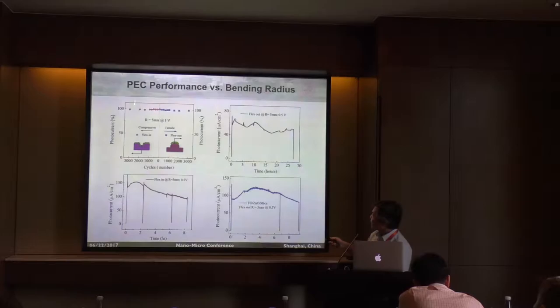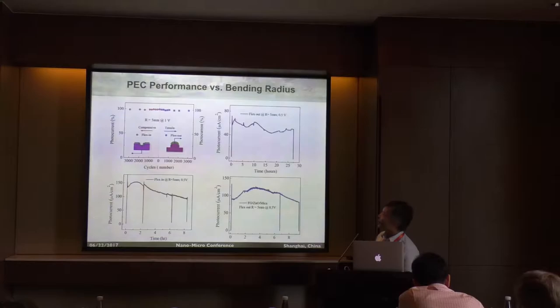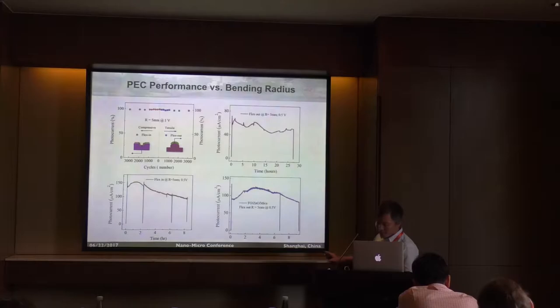The next question is about chemical stability. We checked the stability for flex in and flex out. For iron oxide of about 20 nanometers, you may see about 30% degradation of your photocurrent. Then we slightly increased the thickness of the iron oxide — now we can push the stability to one day, but the performance is a little bit decreased. We are now searching for a solution to fix this.